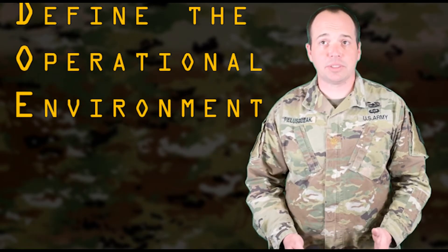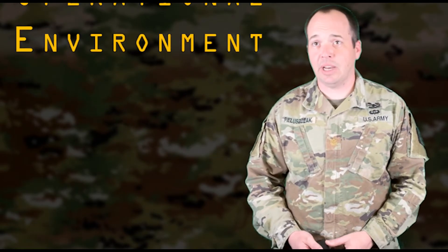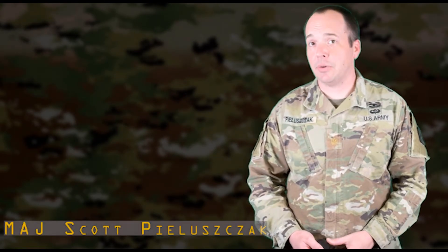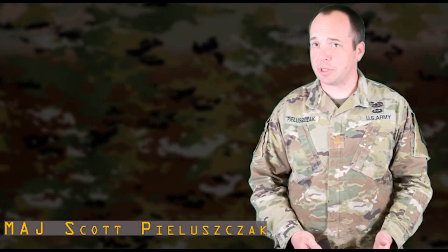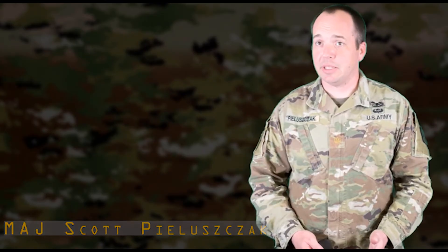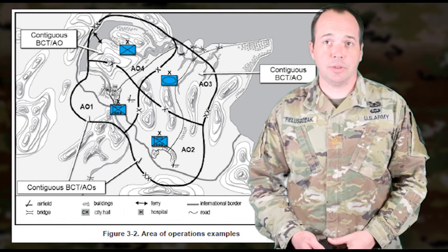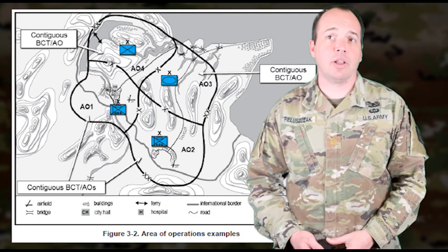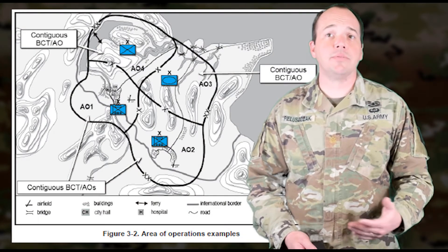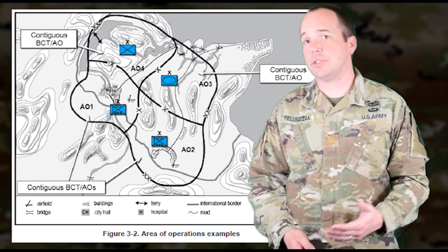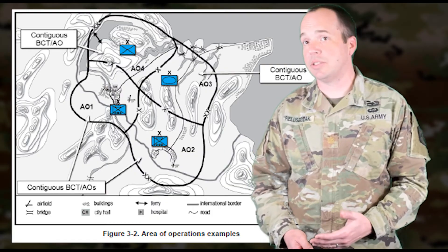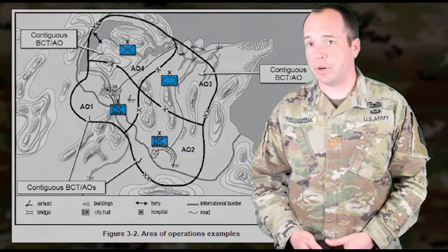The importance of Step 1 is the finding of relative aspects of an OE in time and space for a commander. This step identifies the physical space a unit will occupy along with the areas that may influence or be of interest to a commander's assigned area of operations.